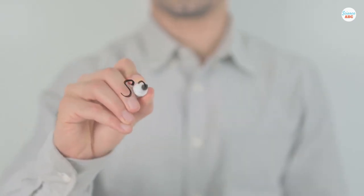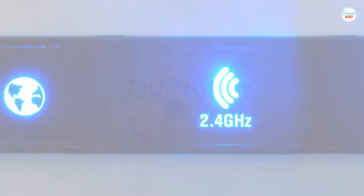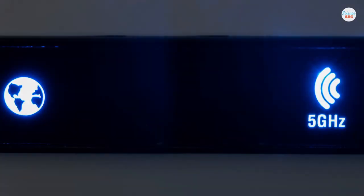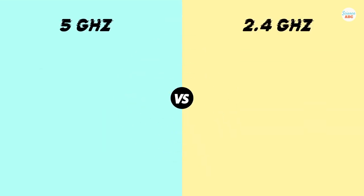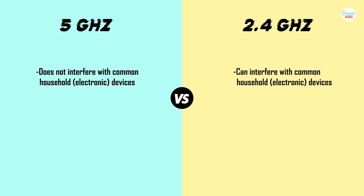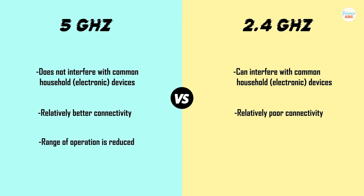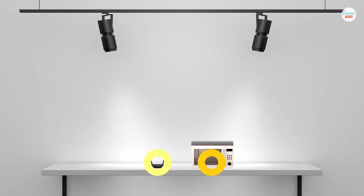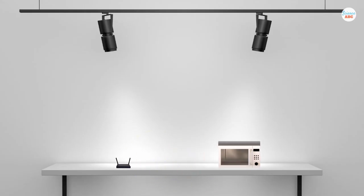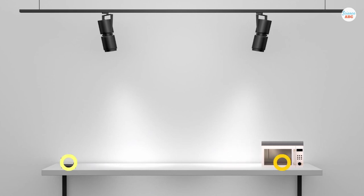The best solution to this problem is to upgrade your Wi-Fi equipment to a system that operates in the 5 GHz band. The advantage of using 5 GHz is that it not only prevents interference from other household devices operating in the 2.4 GHz band, but it also supports better connectivity. However, the operating range of a 5 GHz router is smaller than one operating at 2.4 GHz. Another way to minimize interference is to simply keep the microwave at least a few meters away from your router.